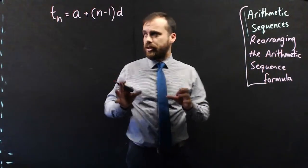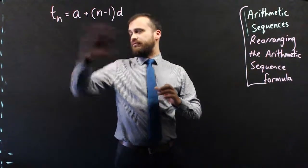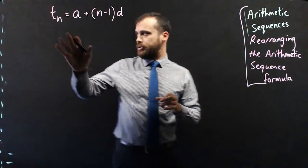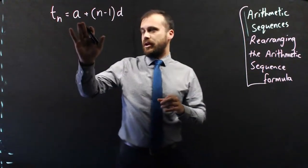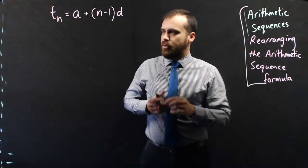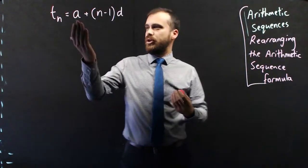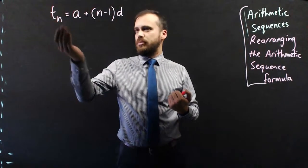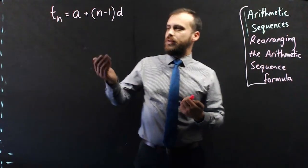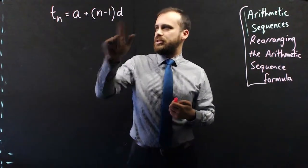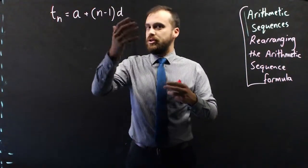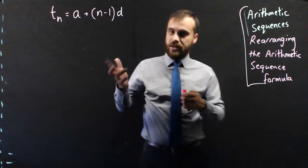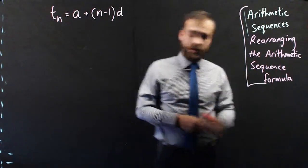So whenever you're given a formula, you can use it in four different ways. Just because this formula says to find term N, you need A, N, and D, what that actually means is if you want to know what A is, you just need to know term N, N, and D. Or if you want to know what N is, you just need to know D, A, and term N. So if you know three, you can find the fourth. That's what I'm getting at.